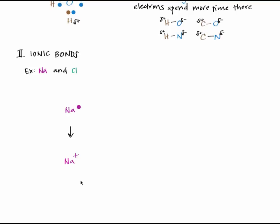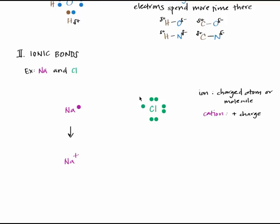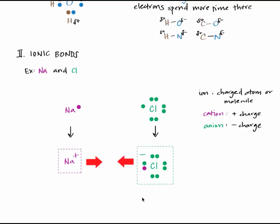Now sodium has more protons than electrons — more positive charge than negative charge — so overall it's positively charged. Any charged atom or molecule is called an ion, and a positively charged ion is a cation. Neutral chlorine has seven electrons in its valence electron shell. A Lewis dot structure of chlorine looks like this. Gaining one more electron would result in a full valence electron shell. Chloride now has more electrons than protons, more negative charge than positive charge, so it's a negatively charged ion or anion. So what happens is electron transfer: sodium transfers one electron to chlorine, resulting in a sodium cation and a chloride anion, both of which have full valence electron shells. These charged ions are now attracted to each other like a magnet, because positive attracts negative, and this attraction is the ionic bond.